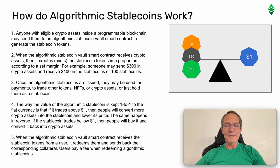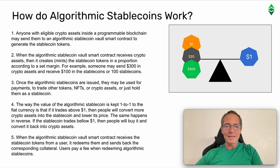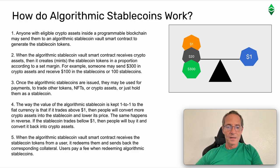How do algorithmic stablecoins work? Step 1: Anyone with eligible cryptoassets inside a programmable blockchain may send them to an algorithmic stablecoin vault smart contract to generate the stablecoin tokens. Step 2: When the algorithmic stablecoin vault smart contract receives cryptoassets, it creates or mints the stablecoin tokens in a proportion according to a set margin — for example, someone may send $300 in cryptoassets and receive $100 in stablecoins. Step 3: Once the algorithmic stablecoins are issued, they may be used for payments, to trade other tokens, NFTs, or cryptoassets, or just held as a stablecoin.